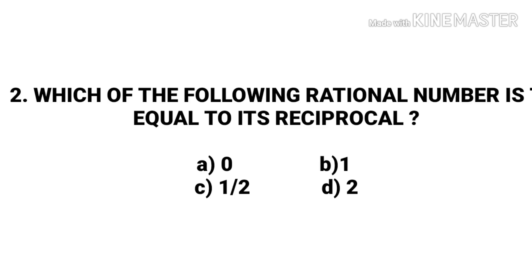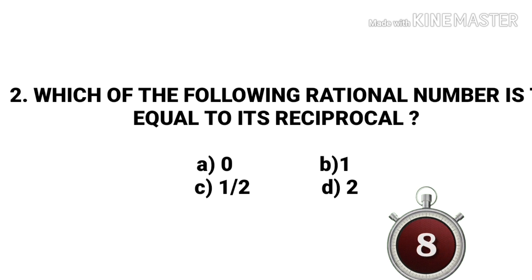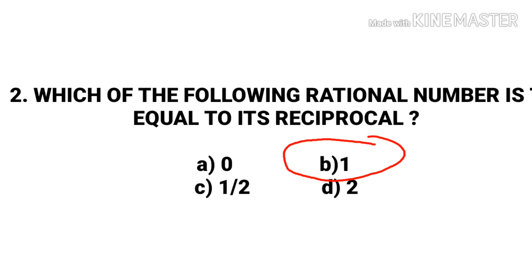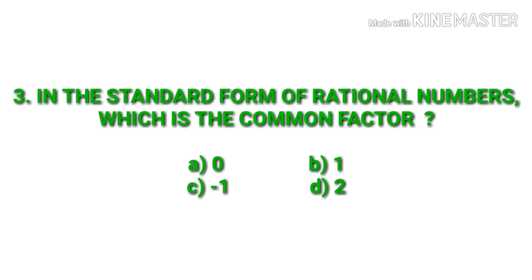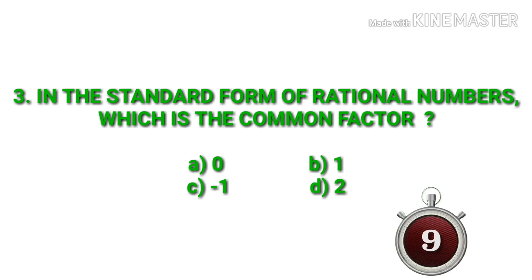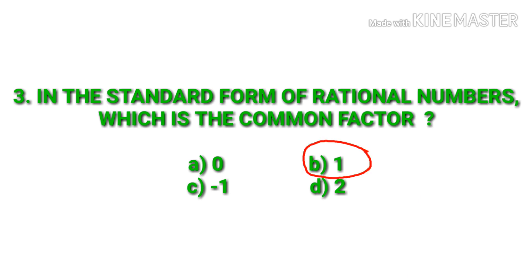Which of the following rational numbers is equal to its reciprocal? The answer is 1. 1 is the reciprocal of itself. In the standard form of rational numbers, which is the common factor? The answer is 1. 1 is the common factor in standard form.